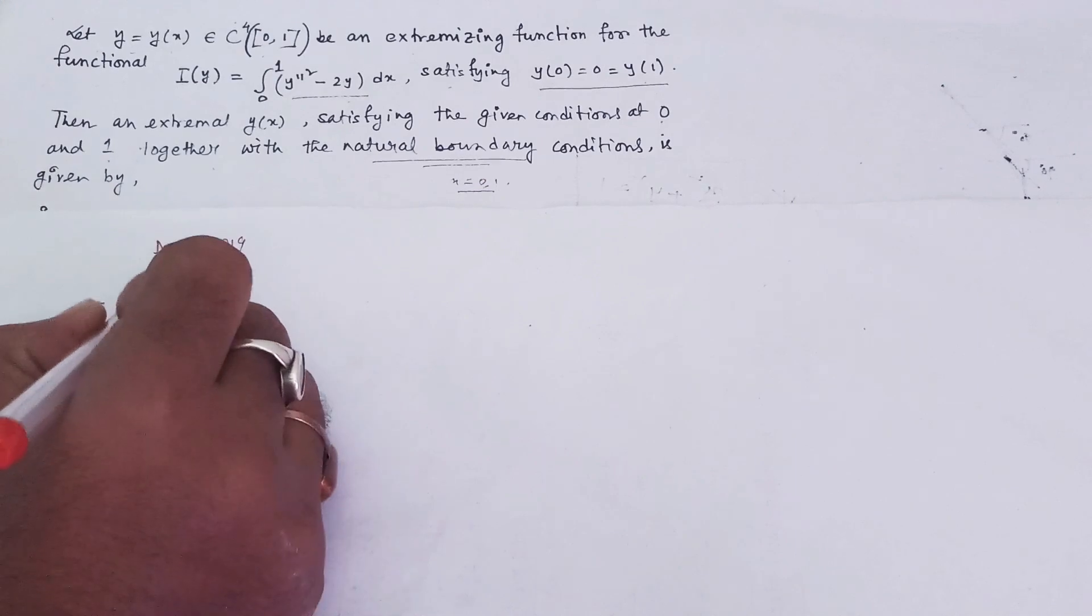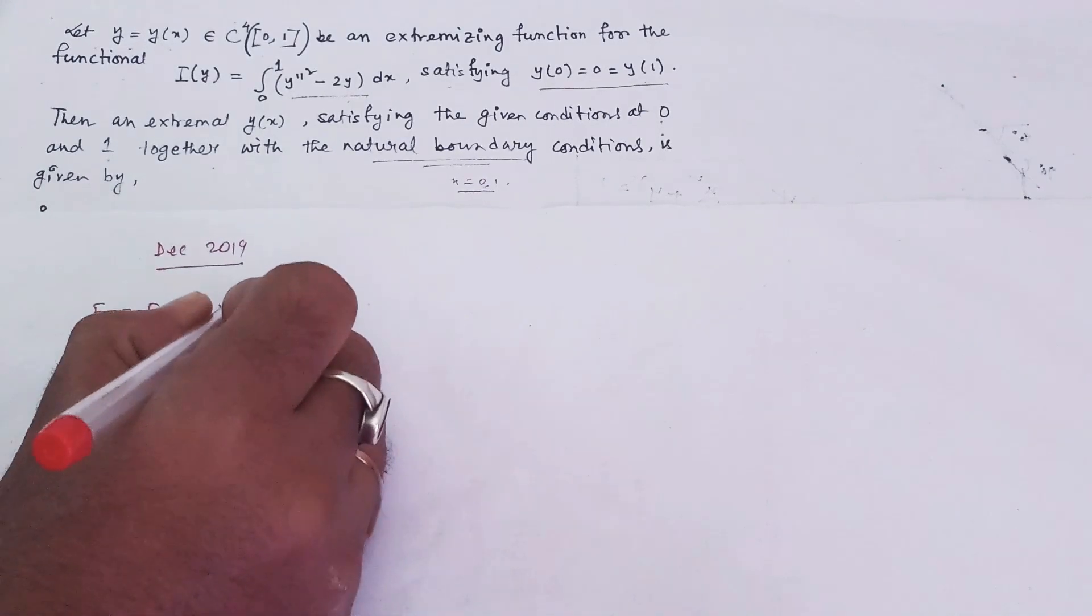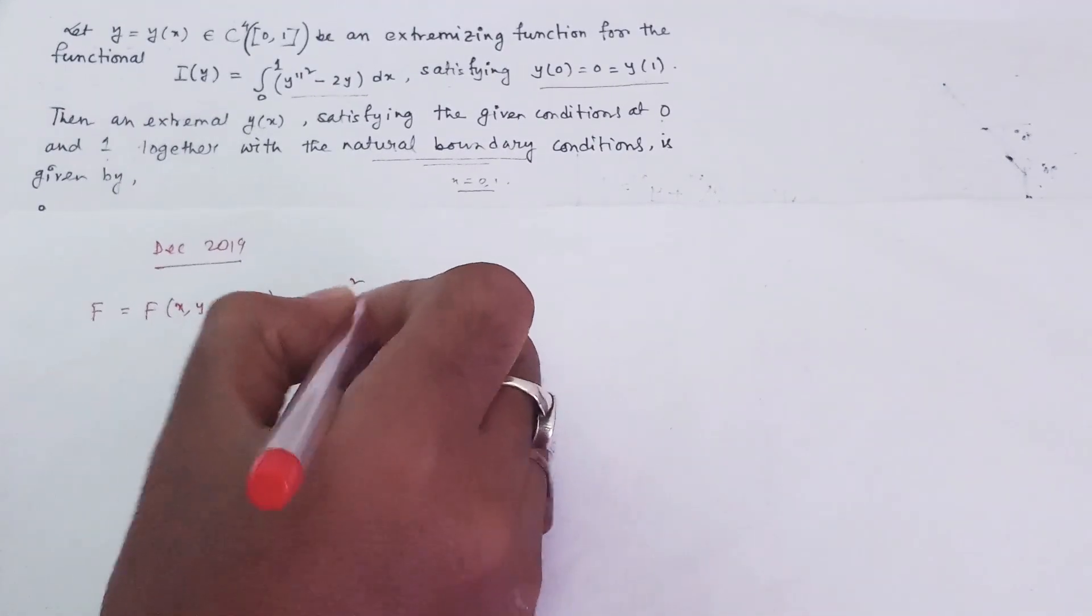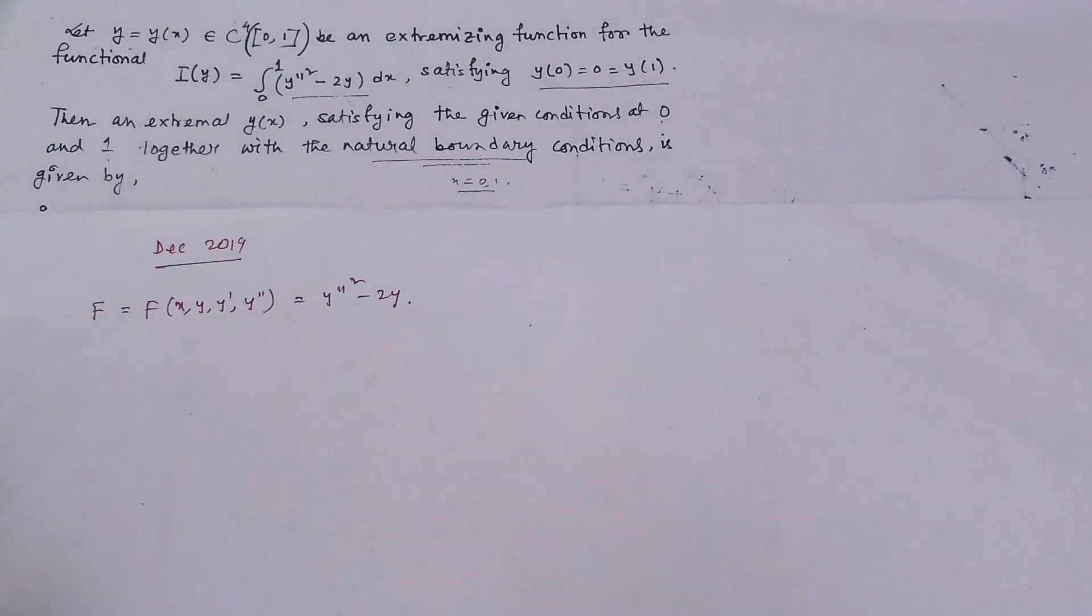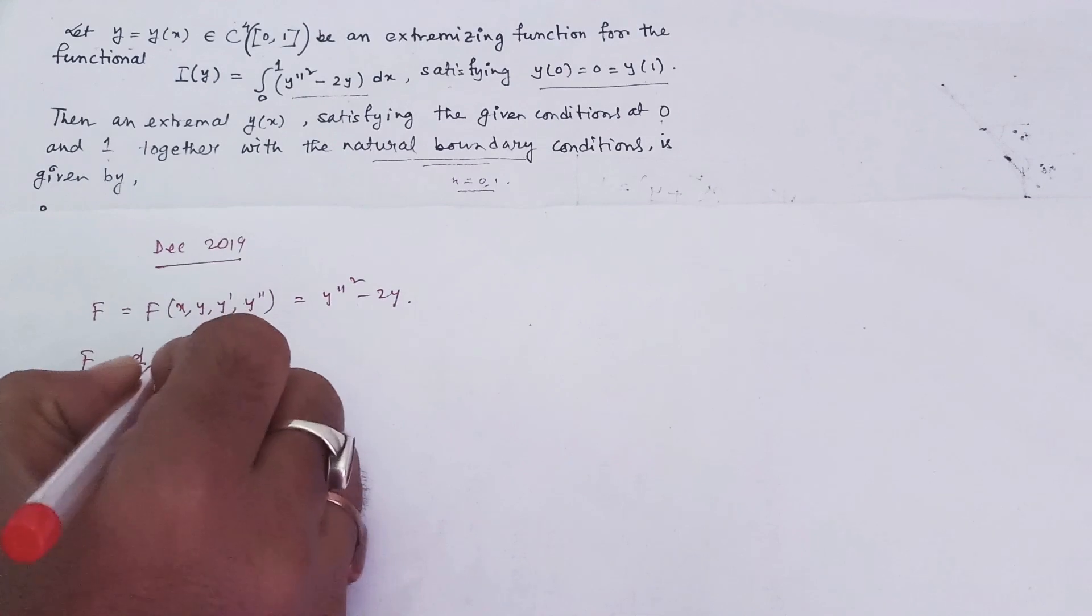Your function f here is f(x, y, y', y''), which equals y''² - 2y. Using the higher-order Euler-Lagrange equation and performing the calculations step by step, you immediately get y⁴ = 1.